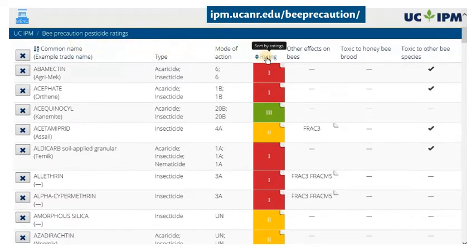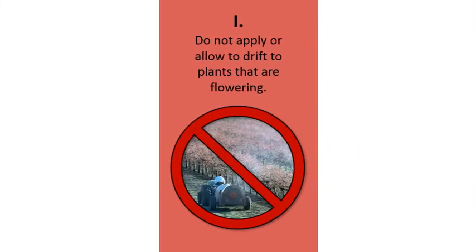Pesticides are divided into three categories. Pesticides rated 1, or red, should not be applied or allowed to drift onto plants that are flowering.